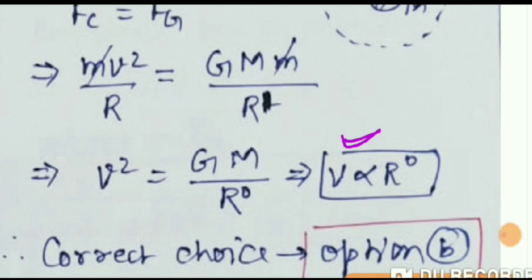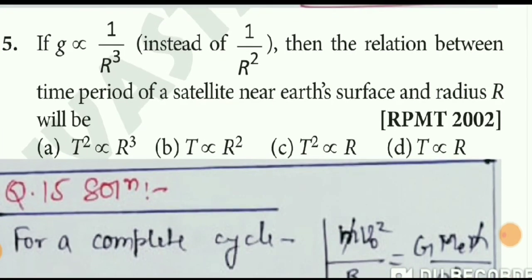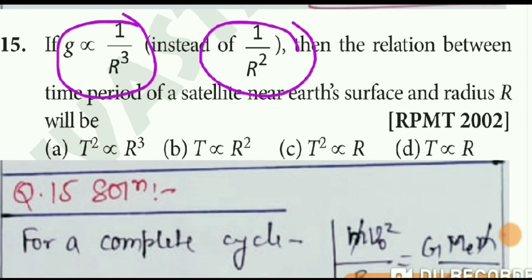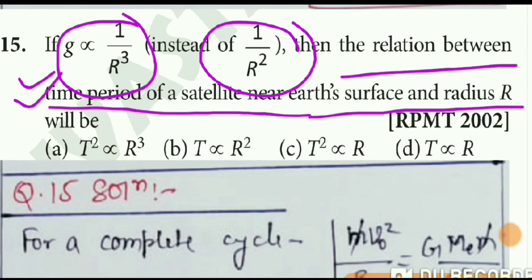Now go to question number 15. Question number 15 is similar but with some changes. Here, if g is inversely proportional to 1/r³ instead of the inverse square law, then what will be the relation between the time period of a satellite near the Earth's surface and radius r?